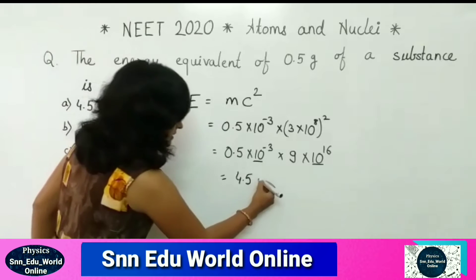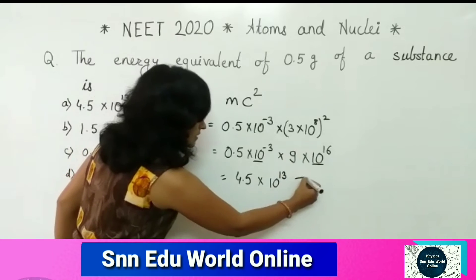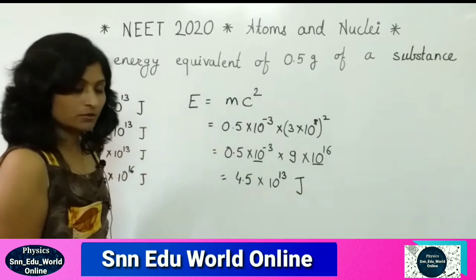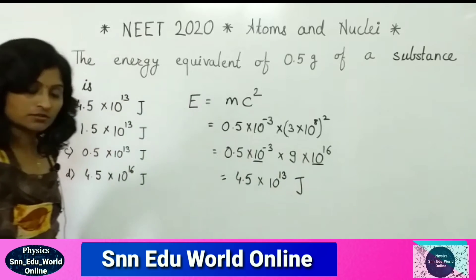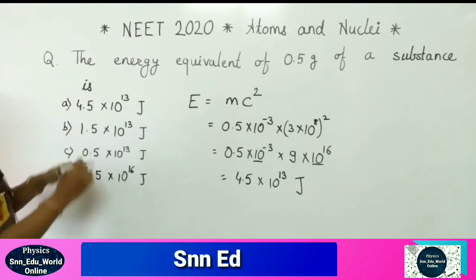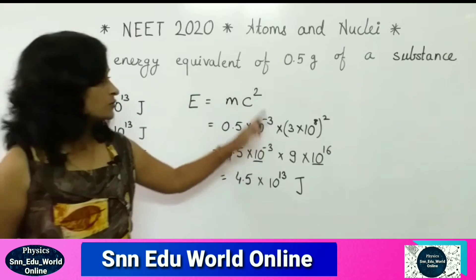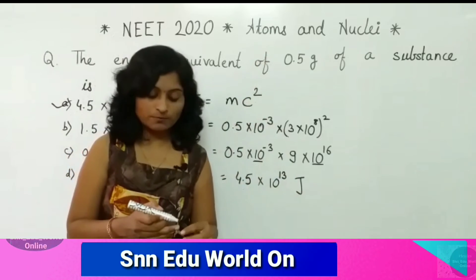And calculate this 10 to the power separately. It is 10 raised to 16 minus 3 will be 13. This is in Joules, because we converted into SI unit. So see here which is matching with your answer. The A option, it is correct according to solution.